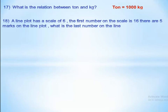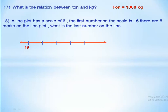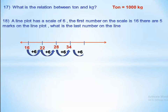A line plot has a scale of 6. The first number on the scale is 16 and there are five marks on the line plot. Starting from 16, we add 6 each time: 16, plus 6 equals 22, plus 6 equals 28, plus 6 equals 34, plus 6 equals 40. So the last number is 40.